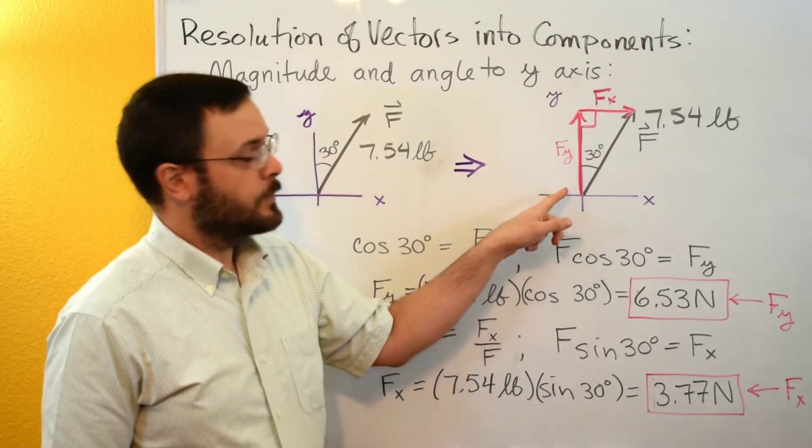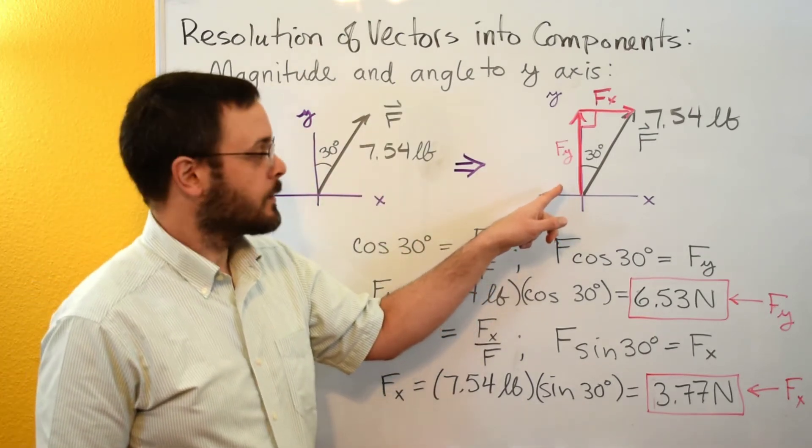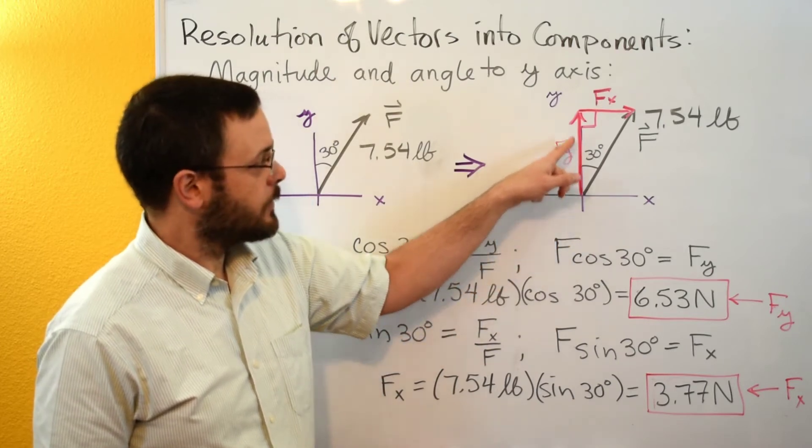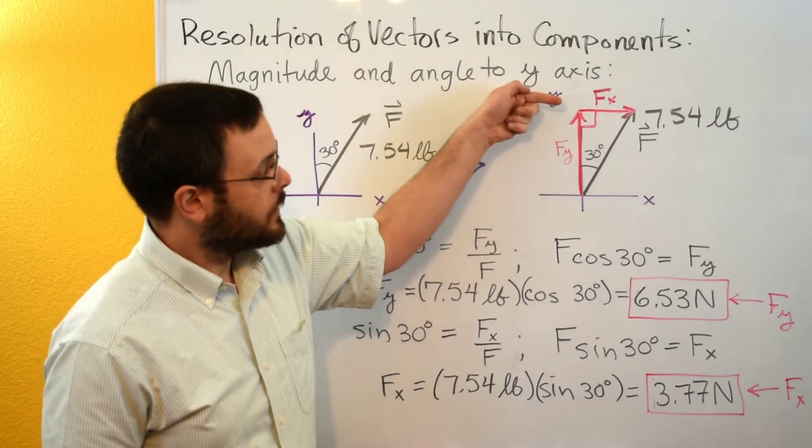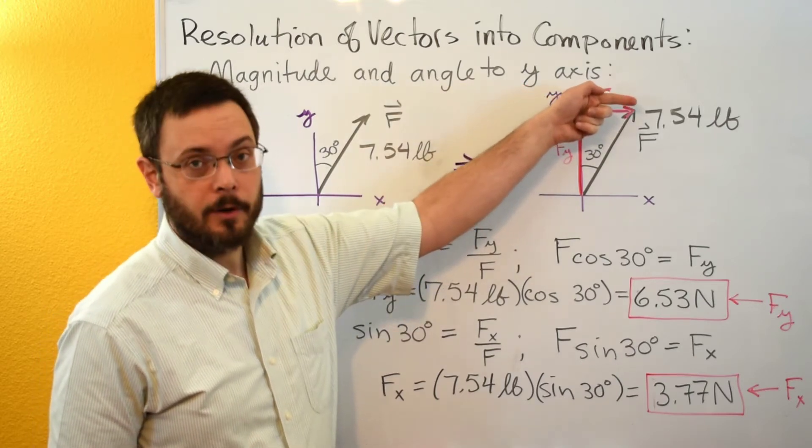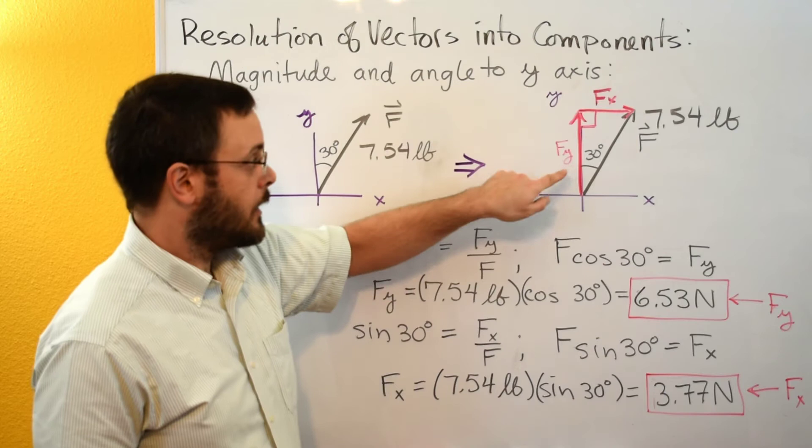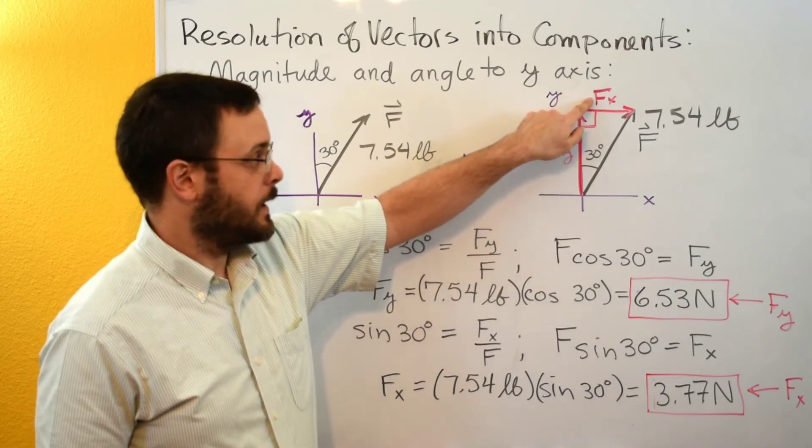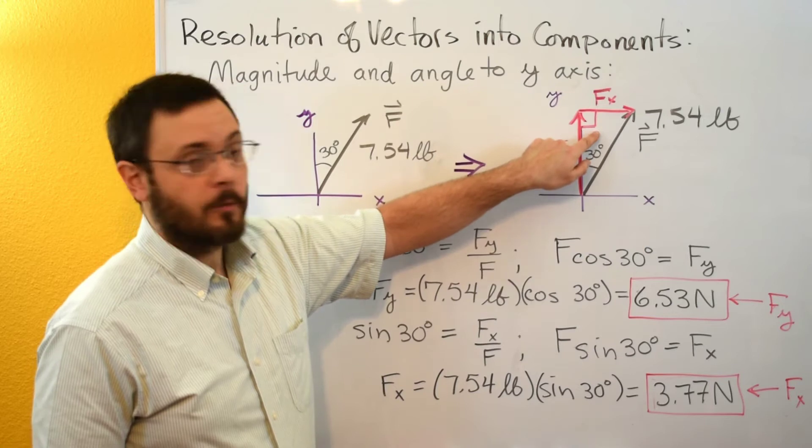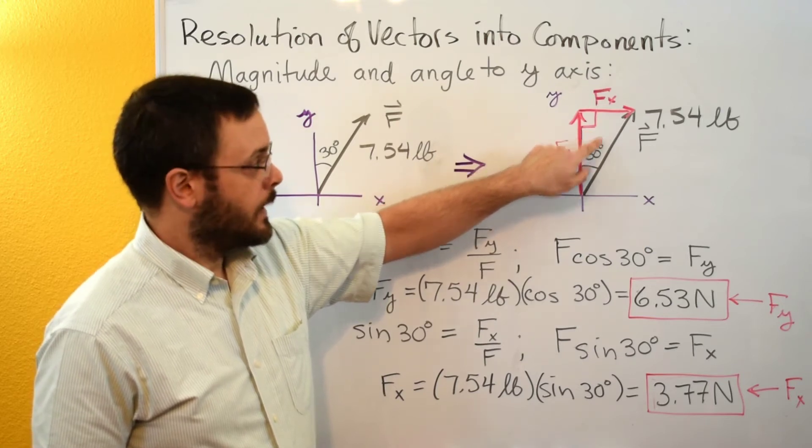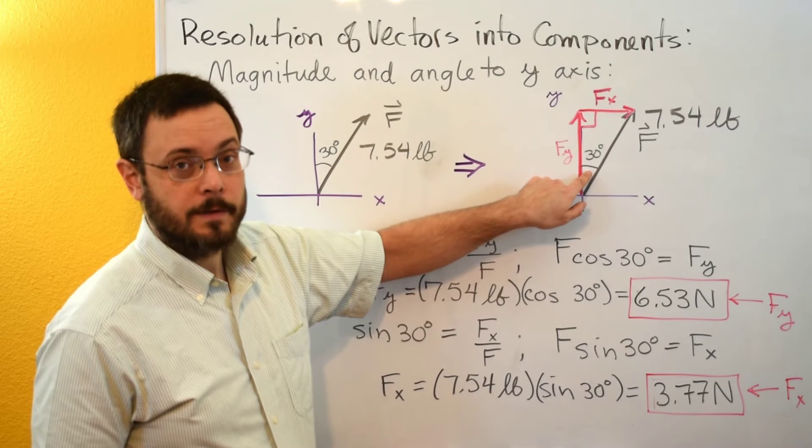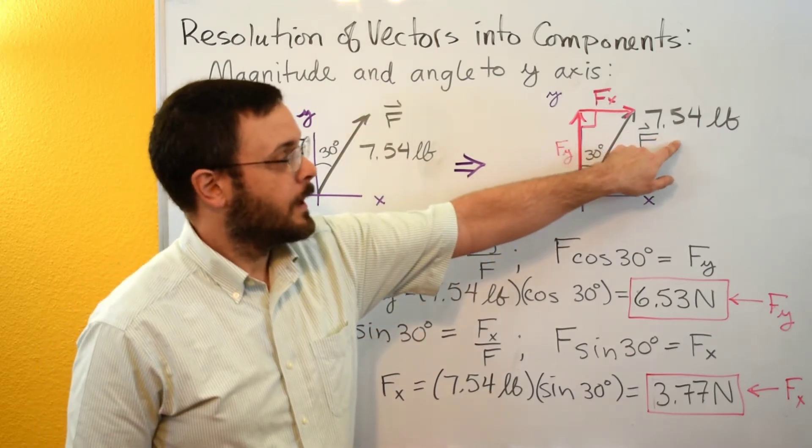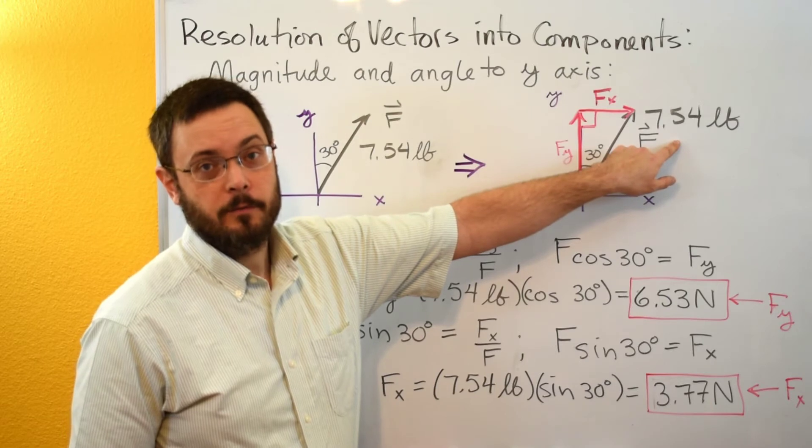We're going to resolve this into our x and y components. So again here's our triangle. We're going to have a y component here going along the y-axis and then an x component here going along parallel to the x-axis. Our y component is fy, our x component is of course fx. These form a right triangle. Here's the right angle here and then we have our 30 degrees down here. The hypotenuse is our f with our magnitude of 7.54 pounds.